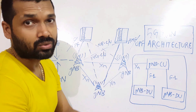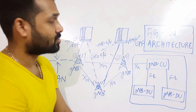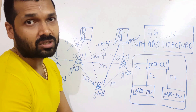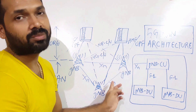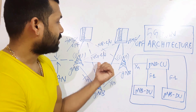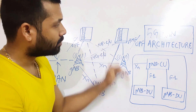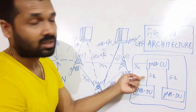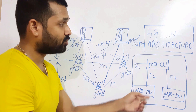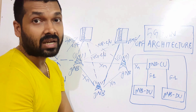To summarize the 5G RAN architecture: the XN interface connects one gNodeB CU to another gNodeB CU — just like X2 in LTE. The NG interface connects the RAN to the core for both signaling and data. The F1 interface — with F1-U and F1-C variants — connects the gNodeB Distributed Unit to the gNodeB Central Unit. That covers the complete RAN architecture of 5G.